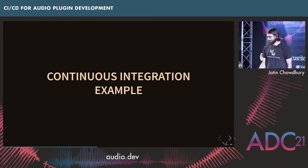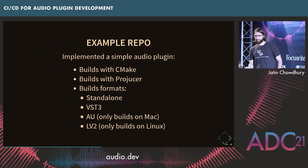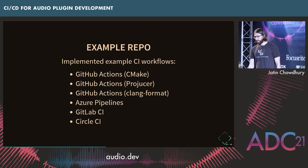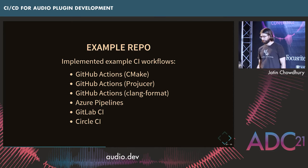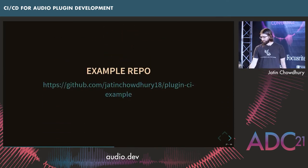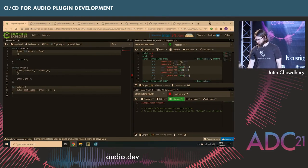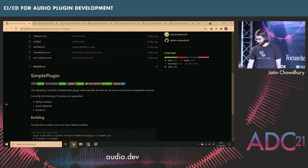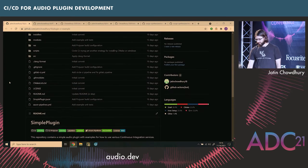Now to dig into a little example. I made a very simple plugin that's just a gain knob — made with JUCE, you can build it with either CMake or the ProJucer, and it supports all of these different formats. I made a little example repository that has CI workflows implemented with all of these tools. If you want to check out the repository, it exists here on GitHub. There are instructions for building and all that.